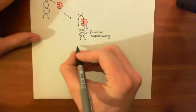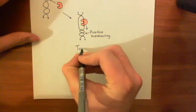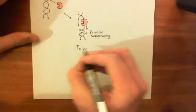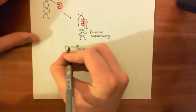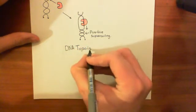So we have a bunch of enzymes which are designed basically to reduce the positive supercoiling of the DNA, and these are called DNA topoisomerases.